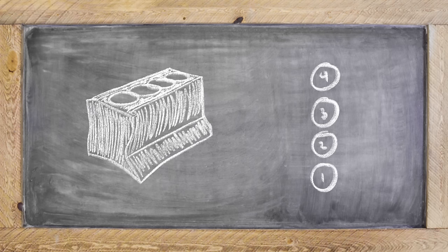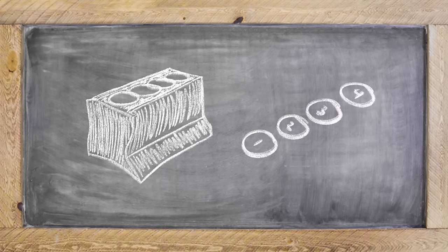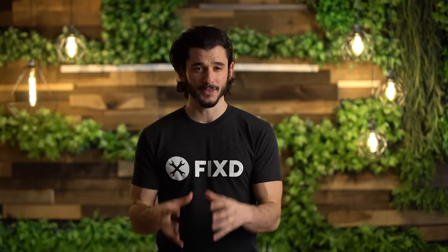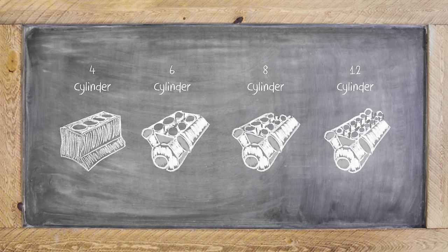P0303 is a specific misfire in your third cylinder, and it's the difference between say a P0302 and P0300, which is a random misfire. Since it's happening in that third cylinder, it could be occurring in a four, six, eight, or even twelve cylinder engine.